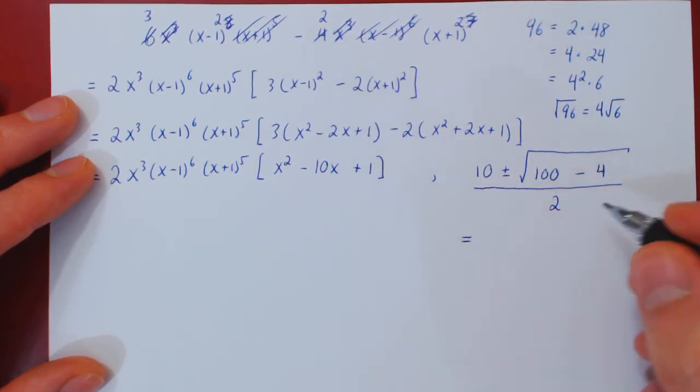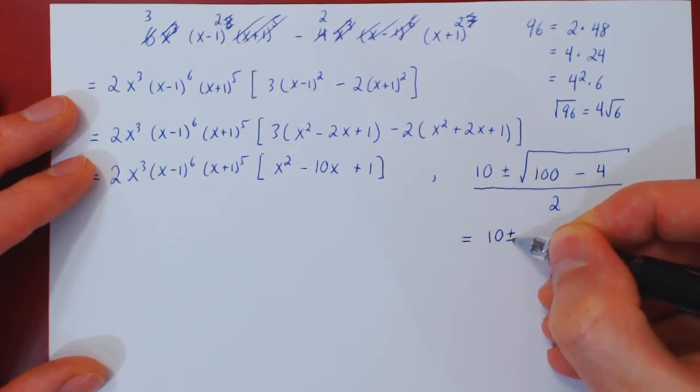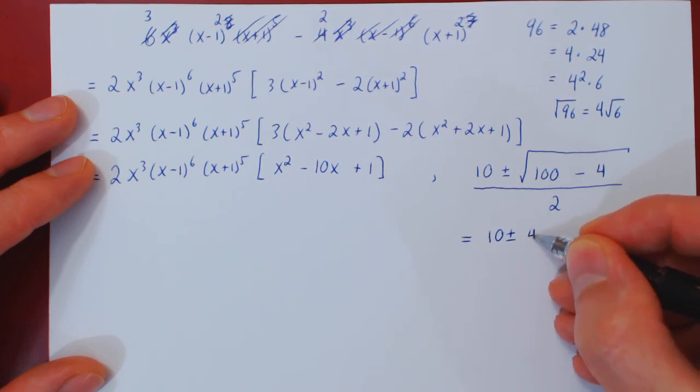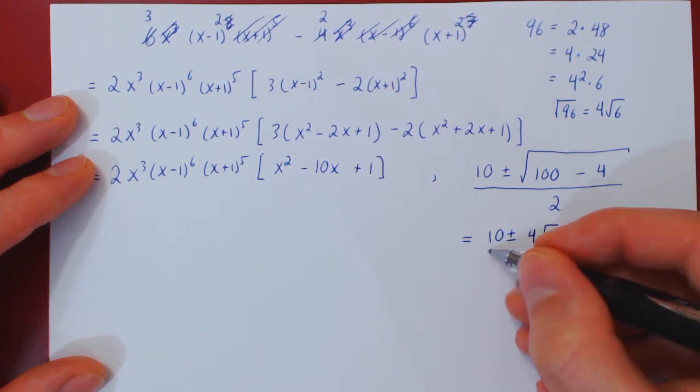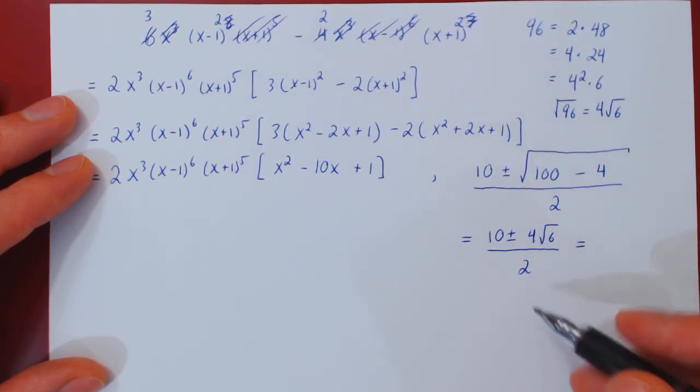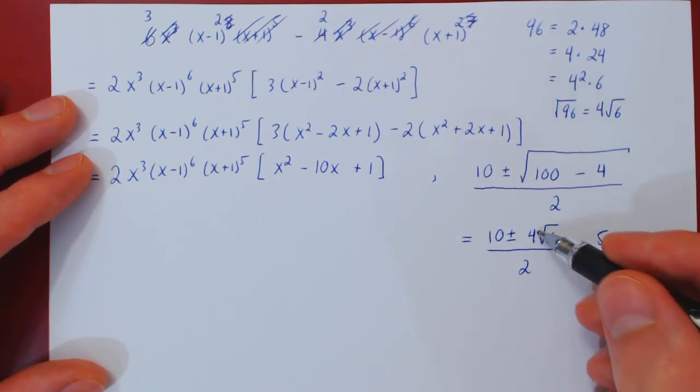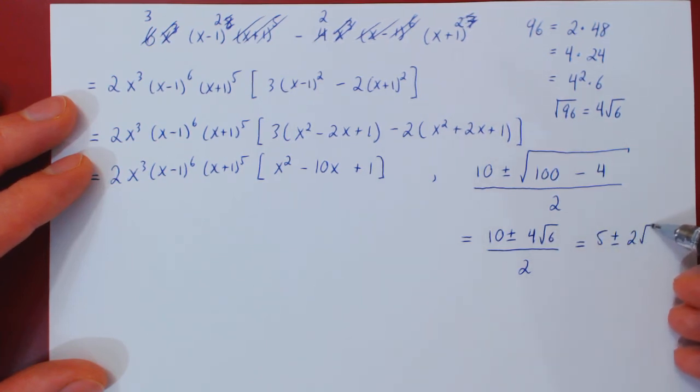And now we can simplify our expression here. So we have 10 plus or minus the root of 96, which is 4 root of 6, all over 2. And what's great is that 10 and 4 are both divisible by 2. So we can divide through. 10 over 2 is 5, plus or minus, 4 over 2 is 2, so 2 root 6.